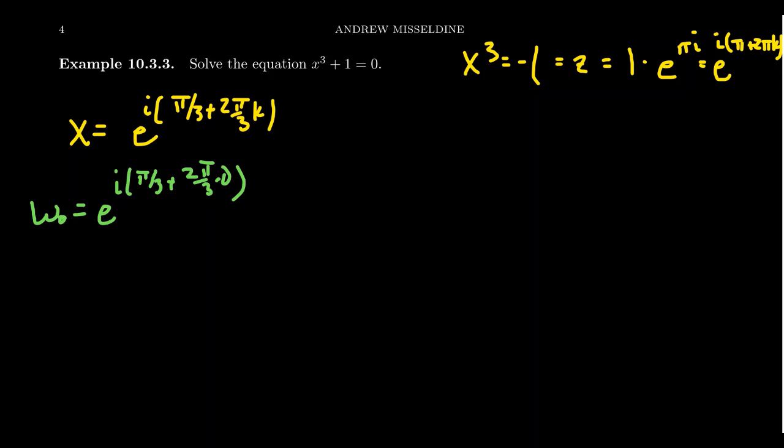The next one would be w₁. This is when that value k is equal to one in that situation. So you get i(π/3 + 2π/3·1).